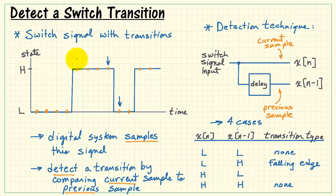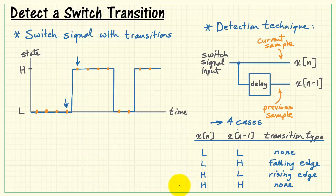Taking the opposite case of current value is high and previous value is low, that's associated with our rising edge. So as we suspect, any time those two values are different we have detected an edge.